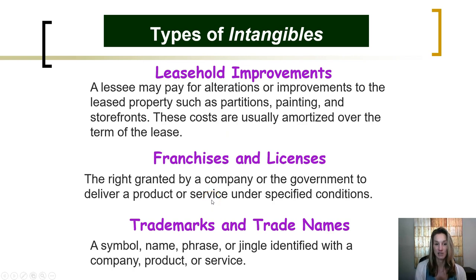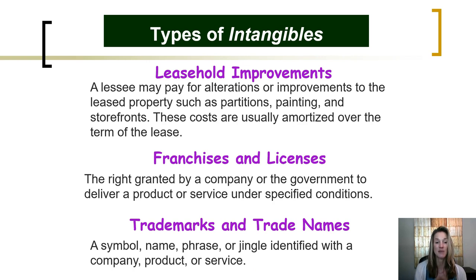Franchises and licenses are the right granted by a company or the government to deliver a product or service under specified conditions. Trademarks and trade names are a symbol, name, phrase, or jingle identified with the company, product, or service. All of these intangible assets definitely provide a value to the company, and that's why we're able to quantify them and report them as an asset on the balance sheet.